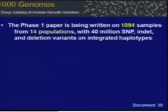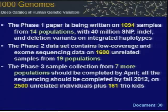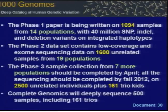Moving to the 1000 Genomes Project: the phase 1 paper is being written on 1,094 samples from 14 populations with 40 million SNP, indel, and deletion variants on integrated haplotypes. Phase 2 data contain low-coverage and exome sequence data on 1,600 unrelated samples from 19 populations. Phase 3 sample collection from 7 more populations should be completed by April, with all sequencing completed by fall on a total of 2,500 unrelated individuals plus 161 trios. Complete Genomics will deeply sequence 500 samples including 161 trios, bringing the total to 2,661 samples studied by the 1000 Genomes Project.